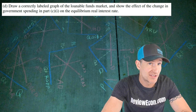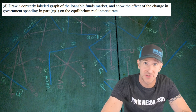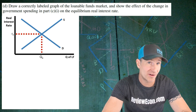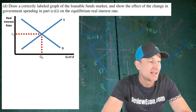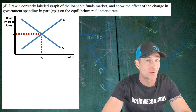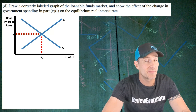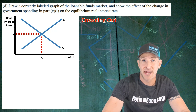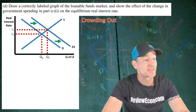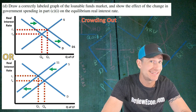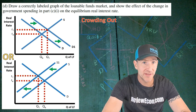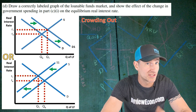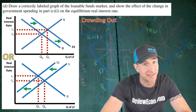For part D, we have to graph the loanable funds market and show the impact of the increase in government spending on the real interest rate. We label the X-axis quantity of loanable funds and the Y-axis real interest rate. We have a downward-sloping demand curve, upward-sloping supply curve, and at equilibrium we mark the quantity and real interest rate. When the government increases spending, it increases its deficit to finance that spending — this is called crowding out. On the graph, that's shown as a rightward shift of the demand curve causing an increase in the equilibrium interest rate, or alternatively a decrease in the supply of loanable funds. Either is acceptable as long as the real interest rate increases. You get one point for the graph and a second point for shifting a curve the correct direction and showing the real interest rate increasing.